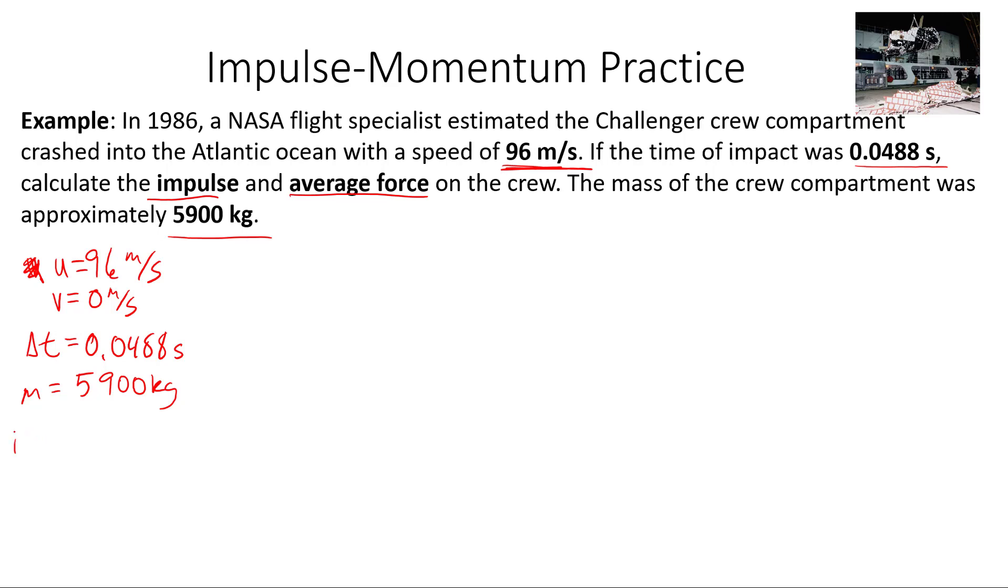We're trying to find the impulse and the average force. We had our equation from before. Impulse is equal to force times time. But it's also equal to the change in momentum of whatever object is experiencing that impulse. We aren't given the momentum, but we're given the velocities and the mass, so we can find the change in momentum.